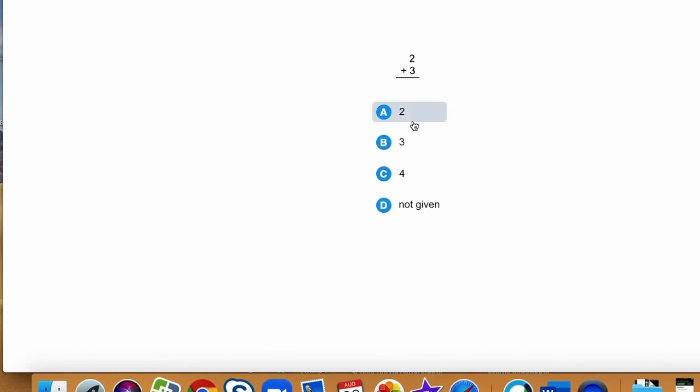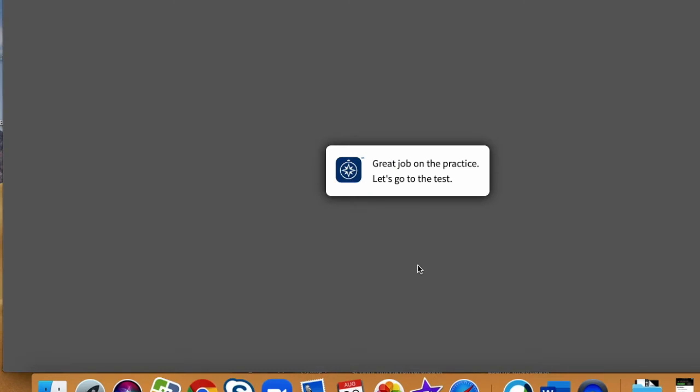So, let me look at my answers. I have two. That's not right. Three. That's not right either. Four. Mm-mm. And the last one says not here. So, I'm going to pick D because five is not there. And five is the answer. Now, it will take me to my test.